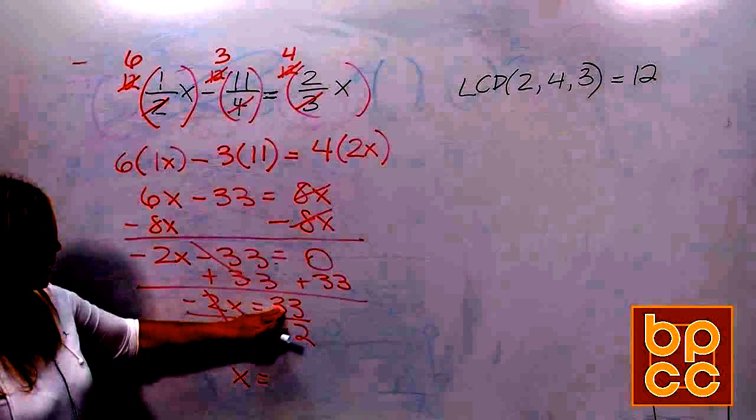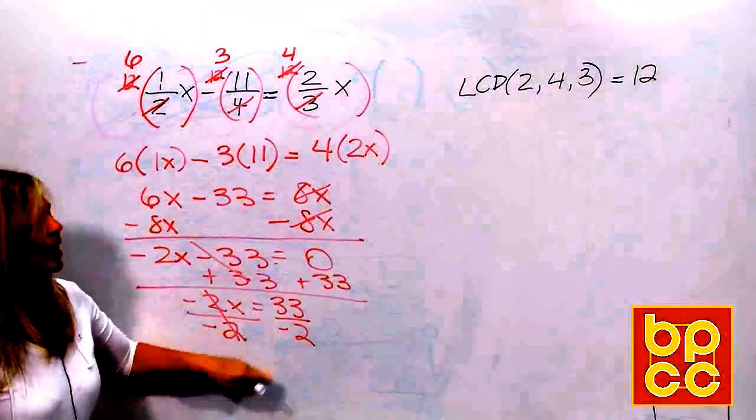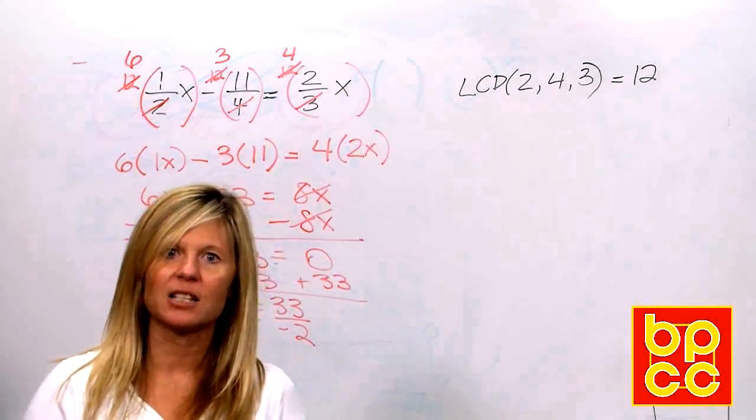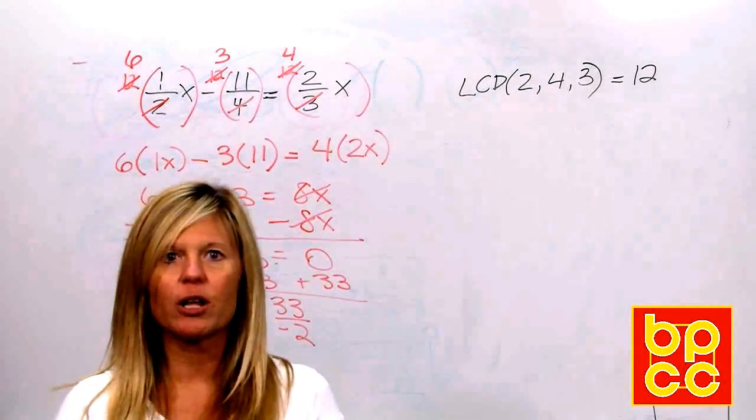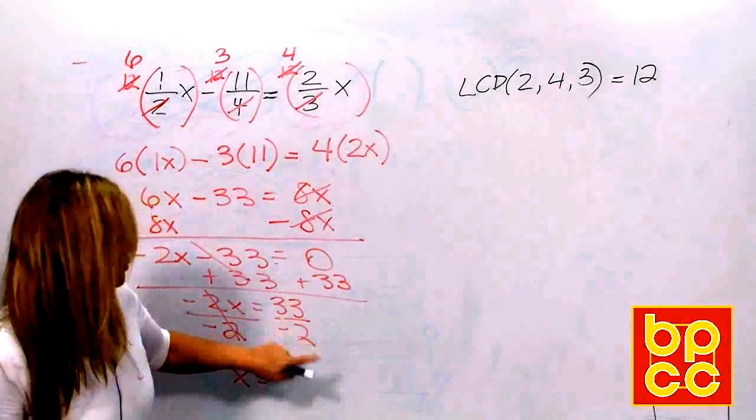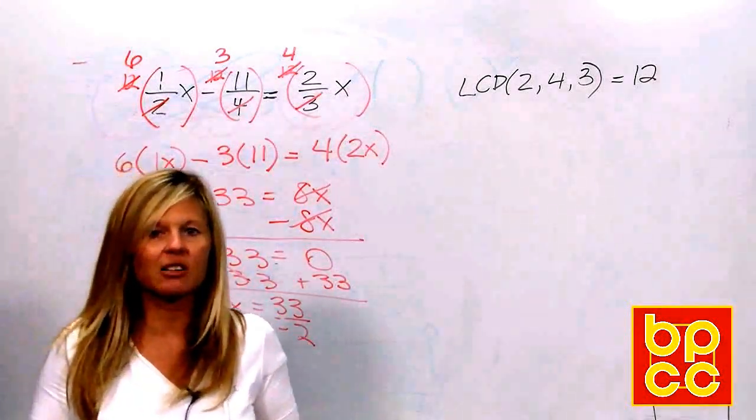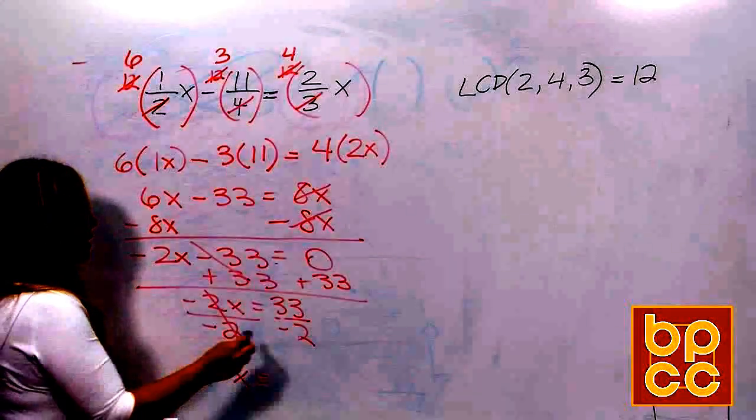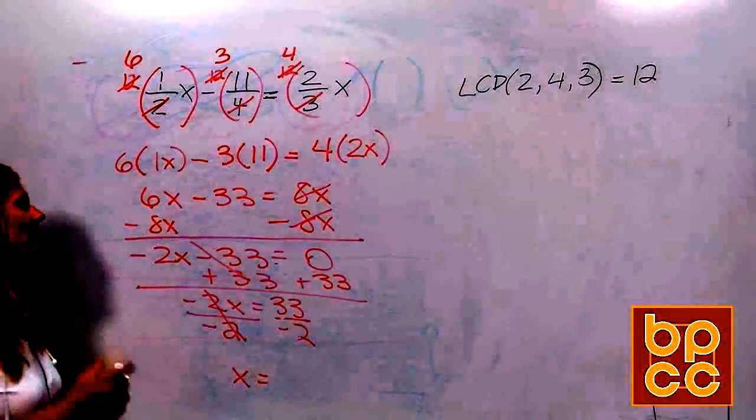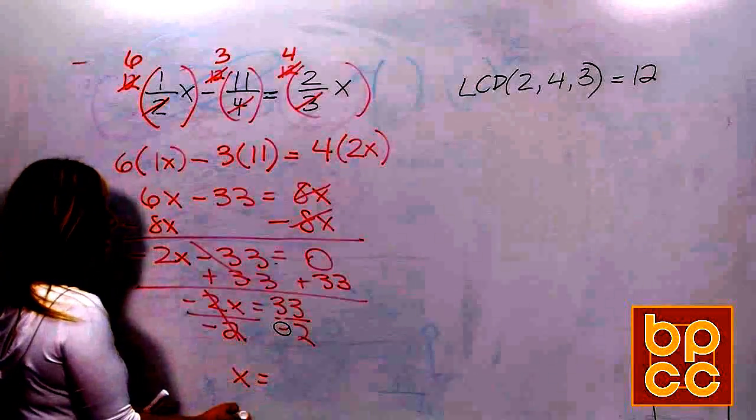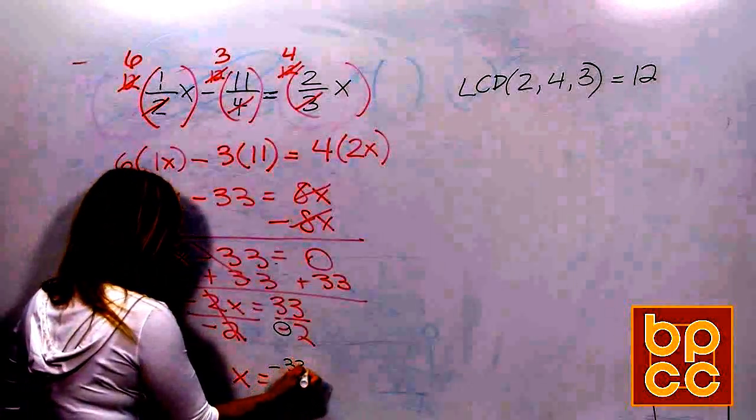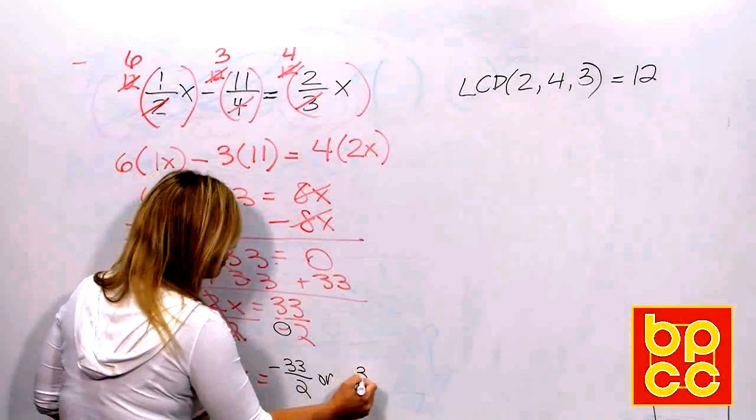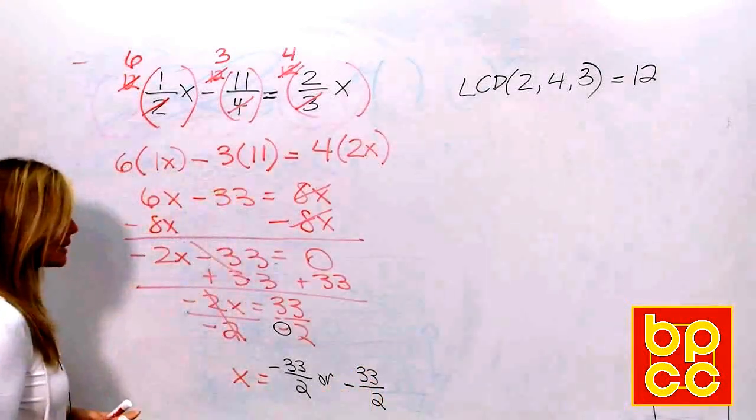Now this is important. 33 doesn't divide by 2 evenly, but you can't leave the answer like this. We talked about this. When an answer is a fraction, the denominator must be a positive number. Think about it in real life: can you take 33 items and divide them into negative 2 groups? Or could you take 33 dollars and divide them by negative 2 people? You can't. So one of the rules you're going to learn is that when you're giving your answer as a fraction, the negative symbol never stays in the denominator. It always floats to the top.